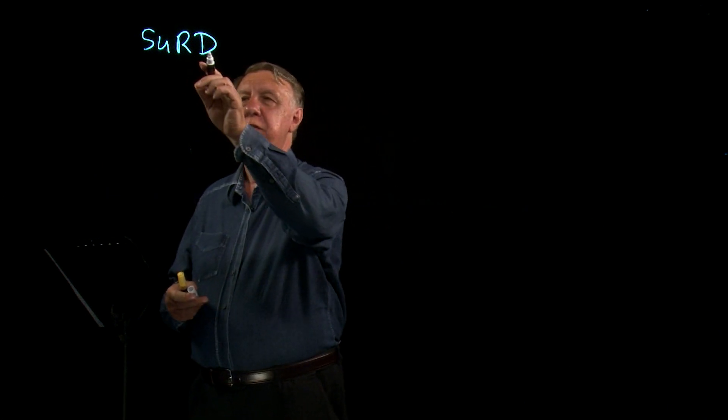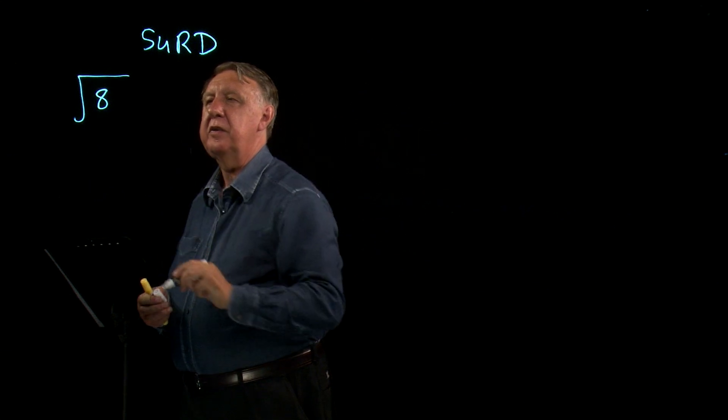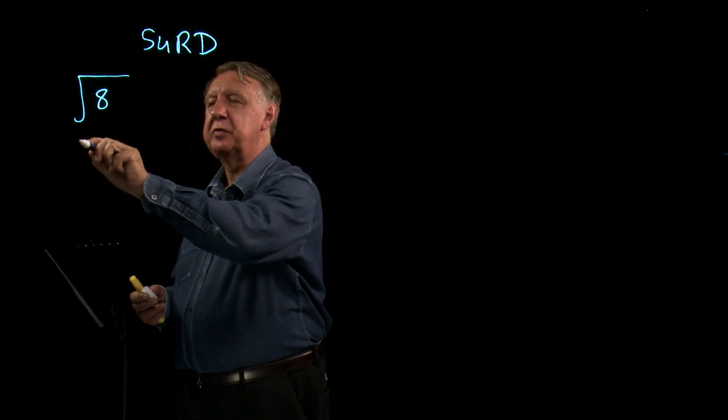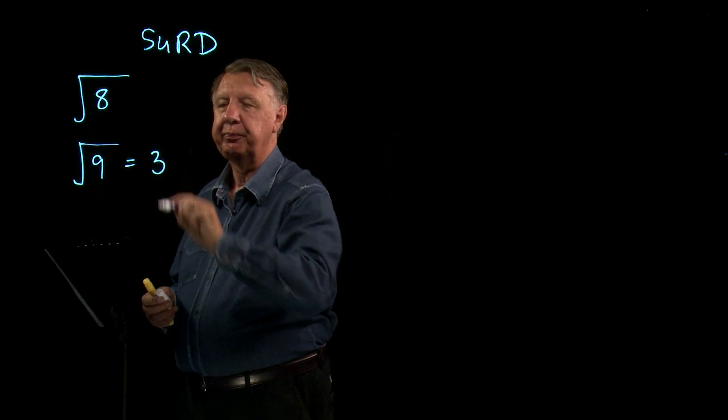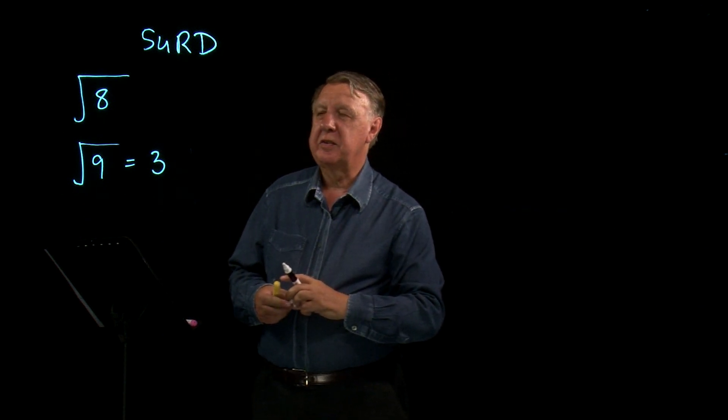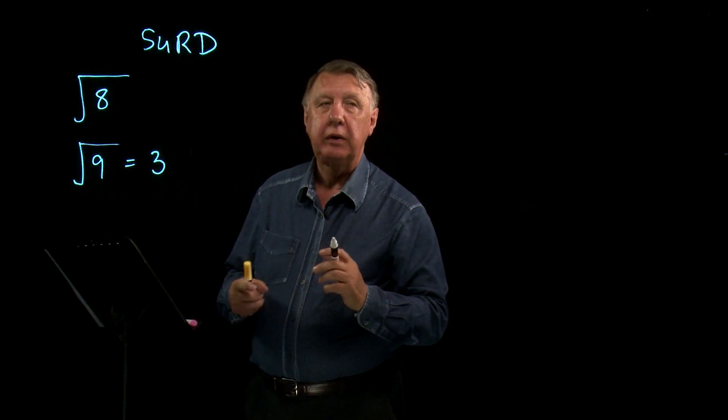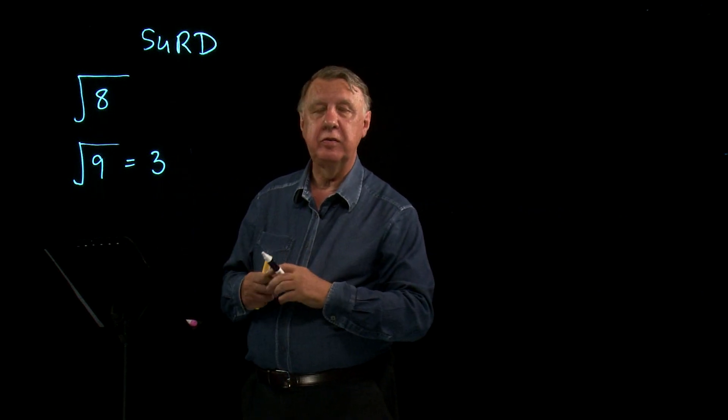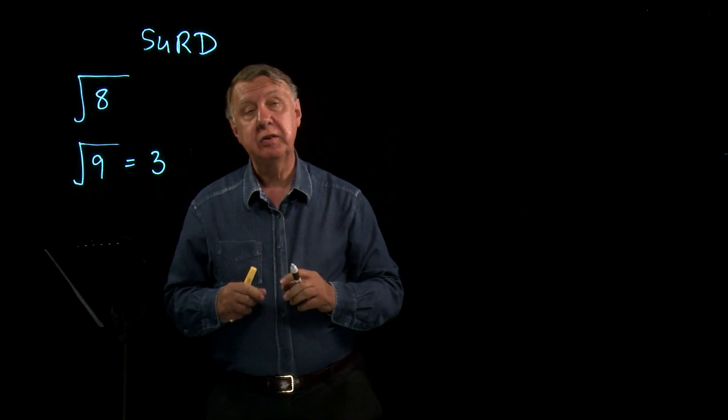We use the word SURD when we're describing things like the square root of 8. Now of course we all know that the square root of 9 is 3. By the way, I hope that none of you think that the square root of 9 could be plus or minus 3. The square root symbol has one value only and it's taken as a positive number. So this is an exact answer.